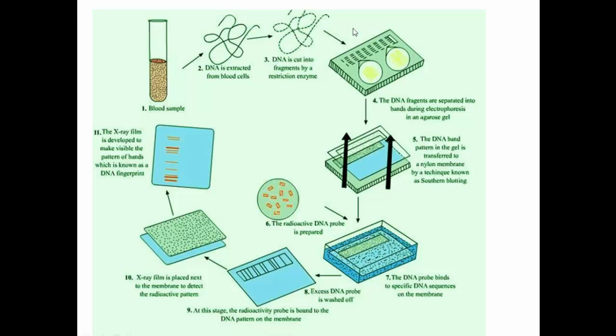The next step is that the DNA is cut down. We know that DNA is cut by restriction enzymes, so the DNA is cut by restriction enzymes. When the DNA is cut down, it is then transferred to gel electrophoresis, where the DNA fragments are separated and create bands in the gel electrophoresis machine.